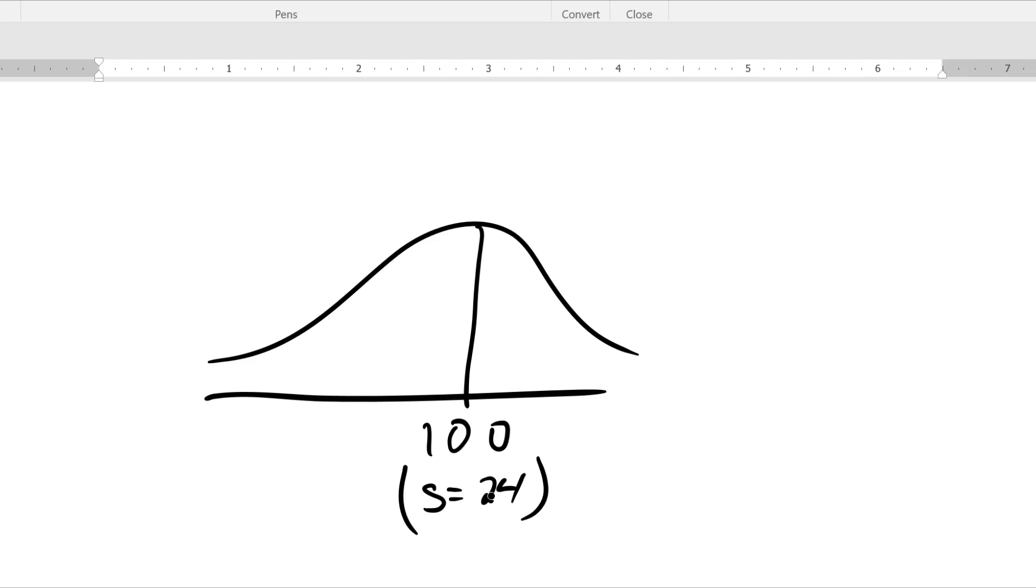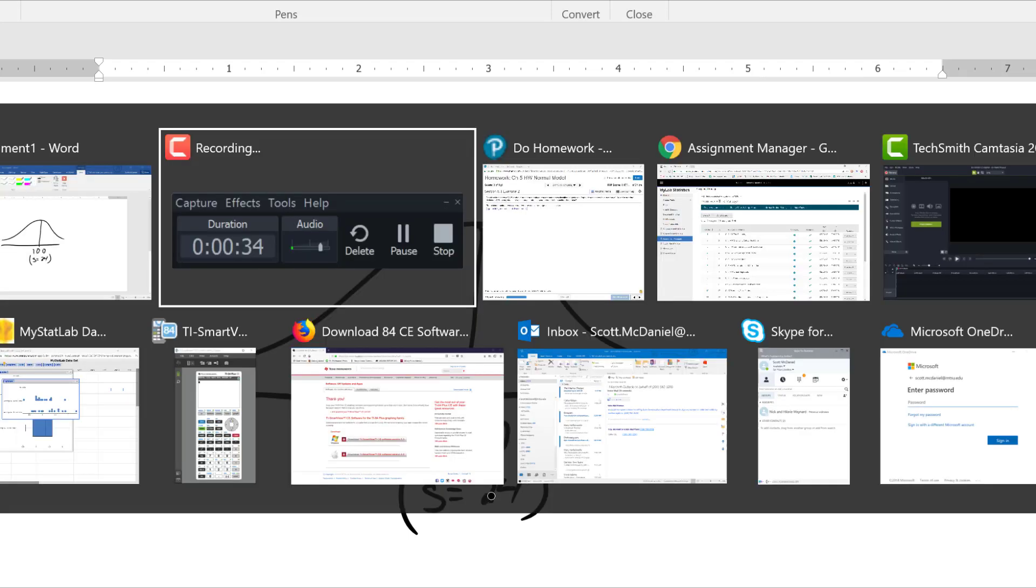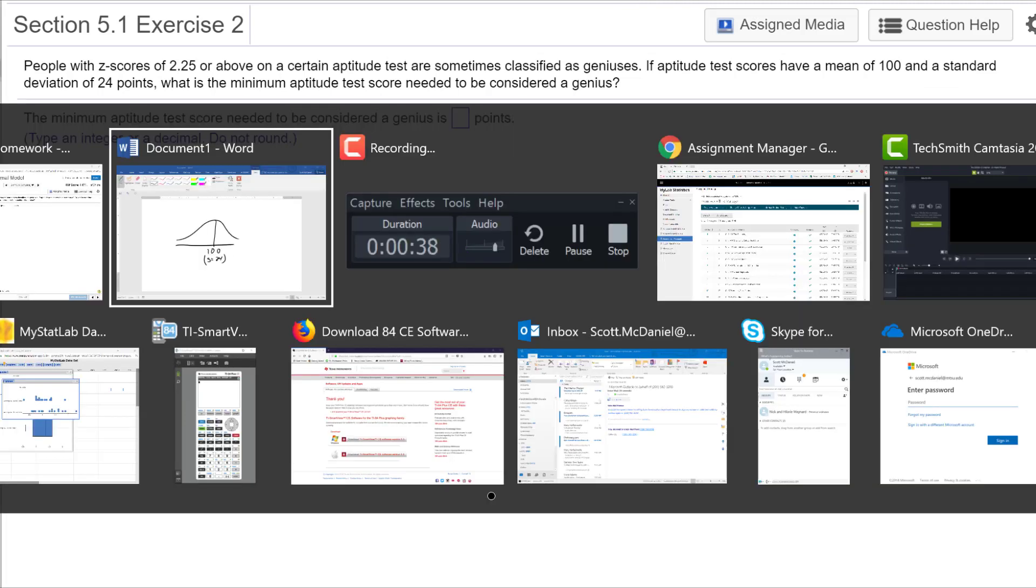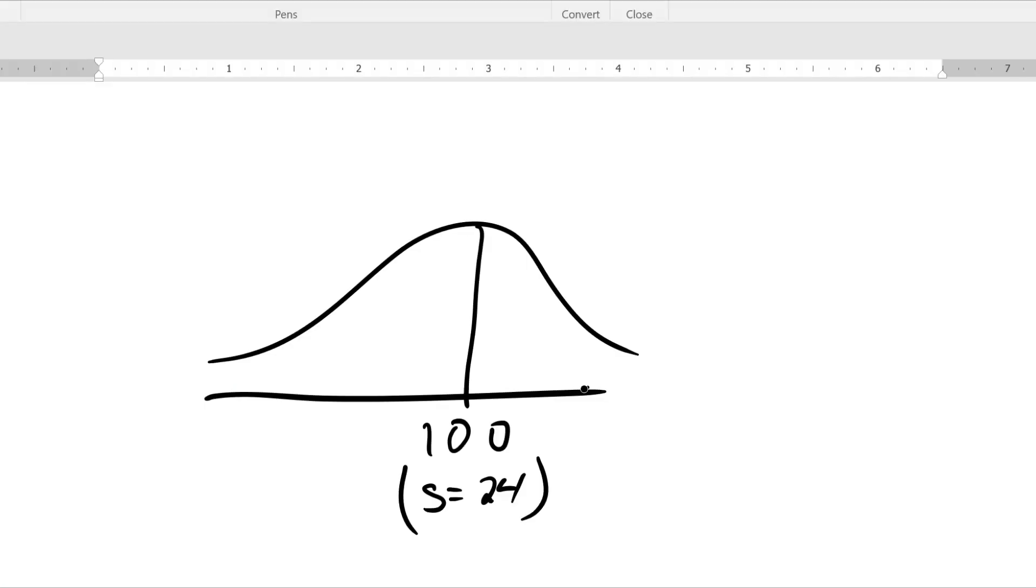And we're trying to get out all the way to 2.25. So let's just sort of think about this. One standard deviation above the mean would be 124. Two standard deviations above the mean would be 148. So something a little bit above 148.